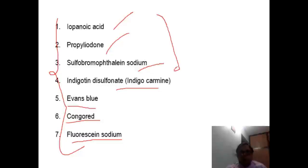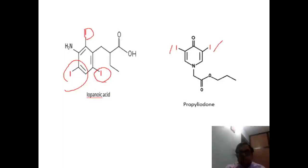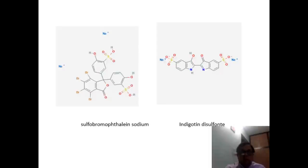So my dear students, before proceeding further, all of you must know the names of all these seven compounds. Iopanoic acid contains three iodine atoms, as you can see in the structure. Propyliodone contains two iodine atoms, one ketonic group, and a propyl chain — that is why it is called propyliodone. The structure of sulfobromothalein sodium contains four bromine atoms and two sulfonic acid groups.